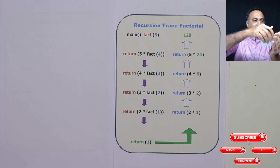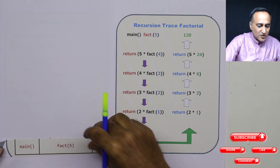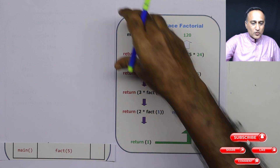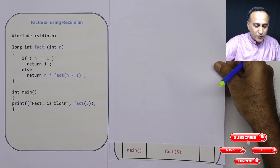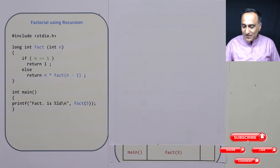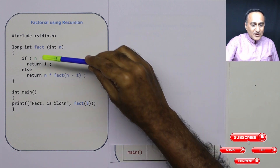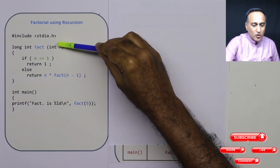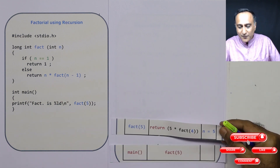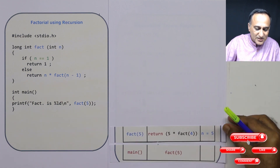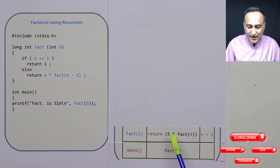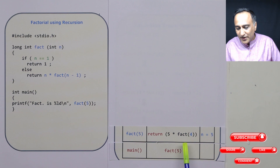Now to enhance your understanding, I shall also show you the solution of this problem using the call stack. Let us say main first calls fact(5). Main is calling fact(5), so the main activation record or stack frame goes here. Now fact is being called with the parameter 5. Since n is 5, the condition is false, so I come to the return. Entering fact(5), I am executing the statement: return 5 into fact(4).